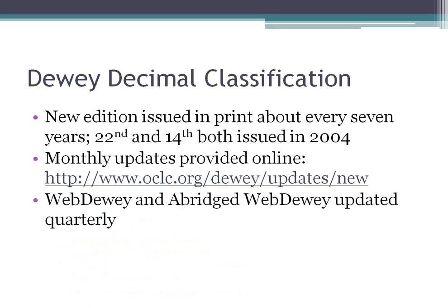Most of you are probably familiar with what the Dewey Decimal Classification is. It's issued in a full version and an abridged version. A new edition is issued in print about every seven years. Right now we're on the 22nd edition of the full Dewey and the 14th of the abridged Dewey, and the abridged is what we're going to be focusing on in this class.